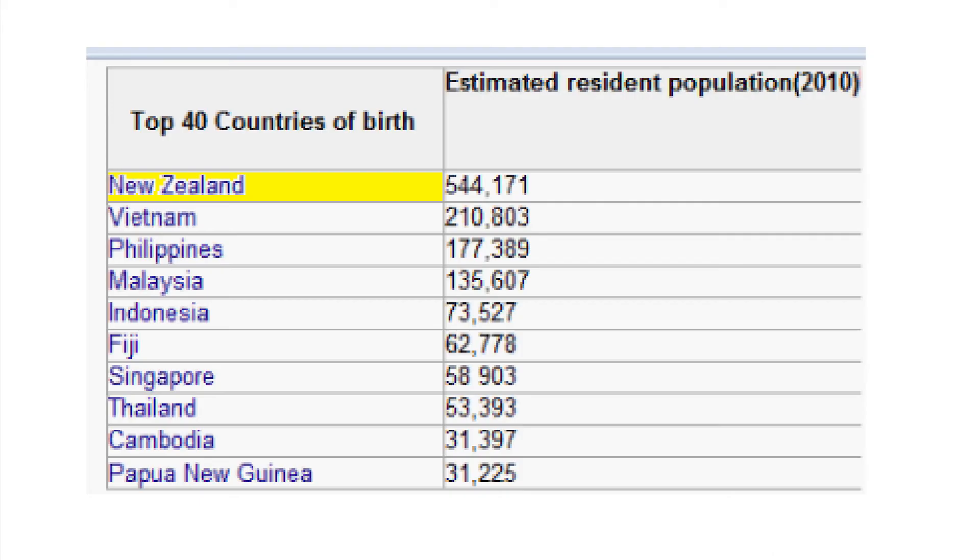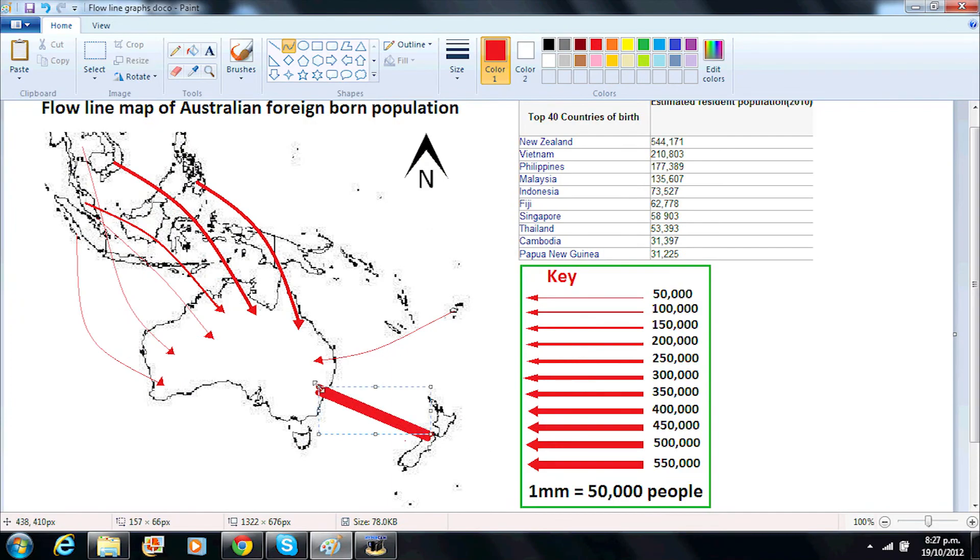Finally, with 544,000 Kiwis residing in Australia, we will draw an 11 millimeter thick line flowing from New Zealand.